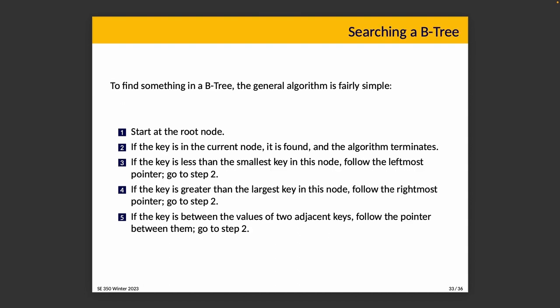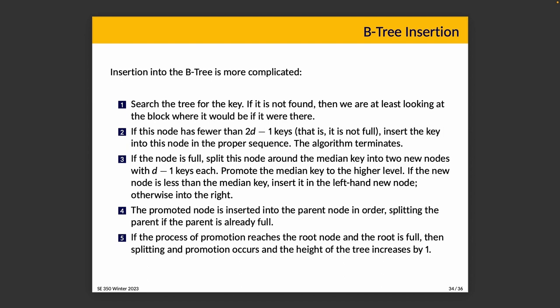It's a lot of rules, but it makes it fairly easy to find something we're looking for. We start at the root node — say we're looking for block 21. If key 21 is in the current node, we're finished and get the pointer to the data. If the key is less than the smallest key in this node, we follow the leftmost pointer. If it's greater than the largest key, we follow the rightmost pointer. If it's between two adjacent keys, we follow the pointer in between them — and in each case we repeat from step two.